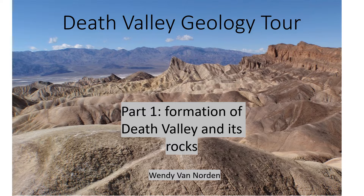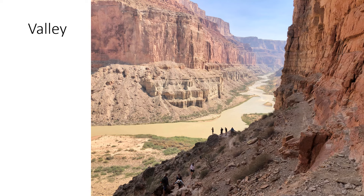This first video will explore the formation and the rocks of Death Valley. First of all, Death Valley is not a valley. If you want a valley, go to the Grand Canyon. The Colorado River carved it on its way to the ocean. A valley is a low area that was carved through the land by water or ice on its way to the ocean or another low-lying body of water.